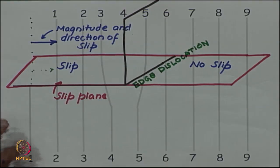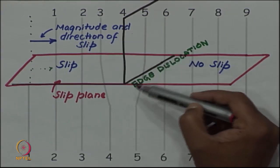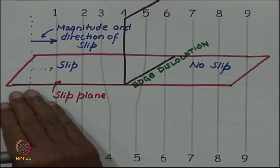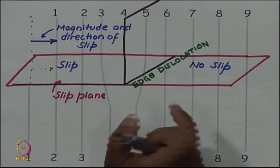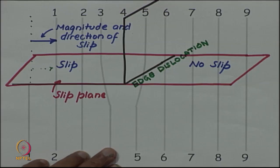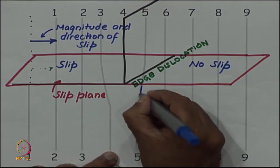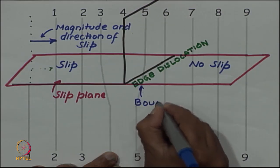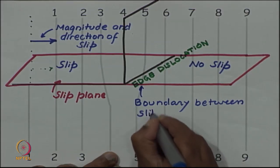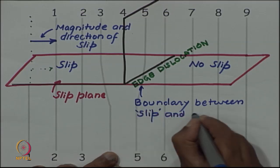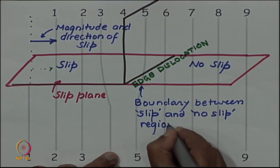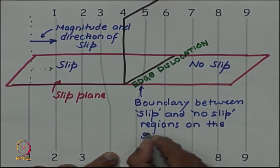You can see that the same extra half plane and the bottom edge of the extra half plane has been created now. I have created an edge dislocation, but I have created it by this imaginary experiment of cutting the crystal and making this slip. In this thought experiment, the edge dislocation now appears to be as the boundary between slipped and unslipped region, between slip and no slip regions on the slip plane.